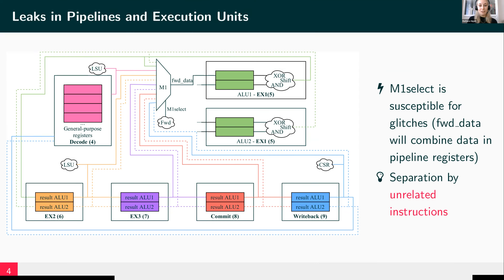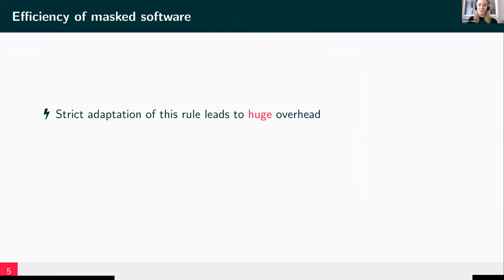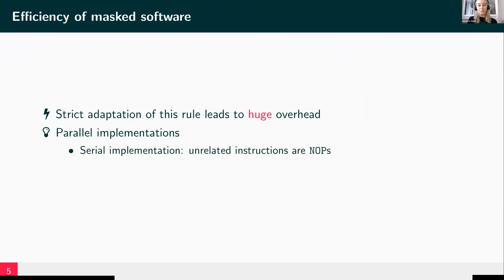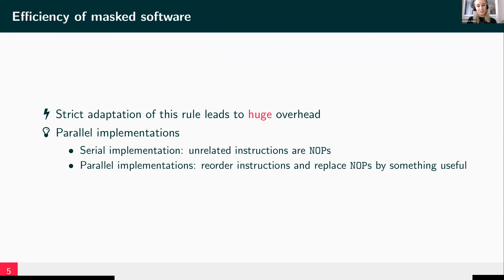How can we fix that? Hardware solutions are not feasible due to the huge latency overhead, which is why we want to fix that on software level by separating two instructions which load shares into pipeline registers by multiple unrelated instructions such as NOPs. However, if we do that, we will still have a huge software overhead. But fortunately, there are several techniques to reduce this overhead. First, parallel implementations — a serial implementation would use NOPs while we can replace these NOPs by something useful by reordering instructions of our masked software. Second, we found that threshold implementations are very useful in this context due to the non-completeness property of the component functions, which can give us certain advantages when designing masked software for complex processors.